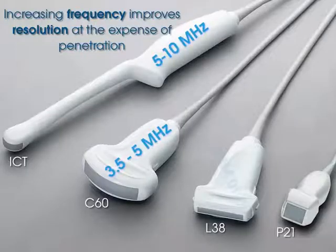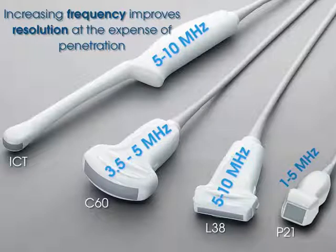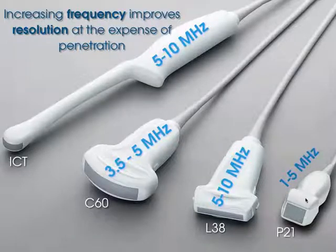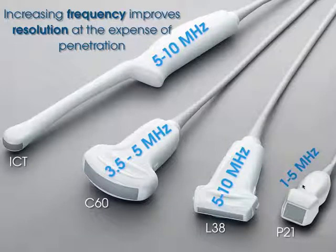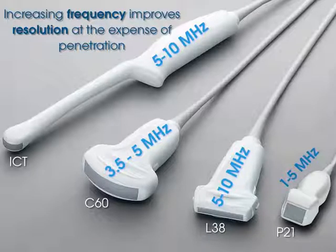Different transducers have different frequency ranges they can toggle through, such as five to ten, three and a half to five, or one to five megahertz. Higher frequency means better resolution but the sound can't penetrate as far. You always want to use the highest possible frequency to penetrate to the depth of interest — higher frequency on a thin patient, lower frequency like one megahertz on a really large patient.